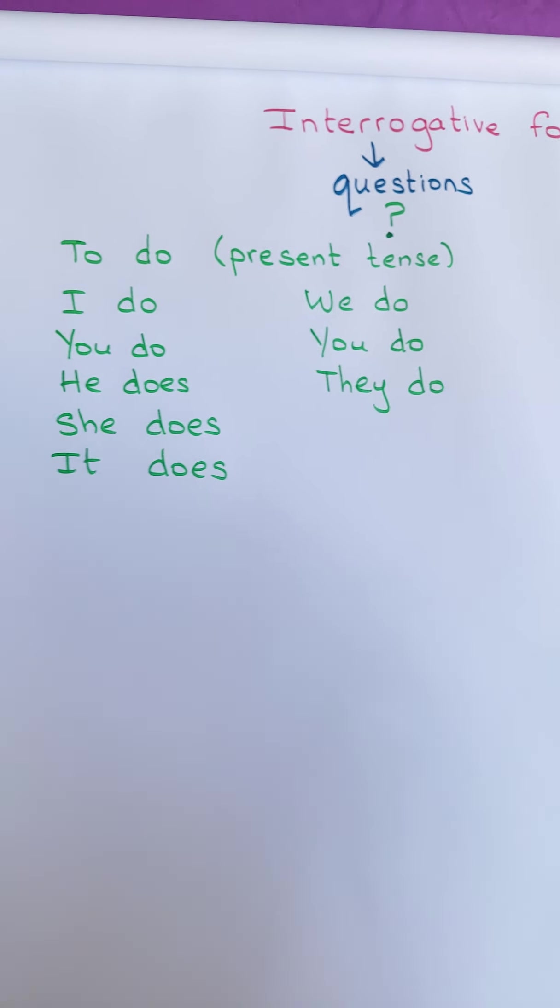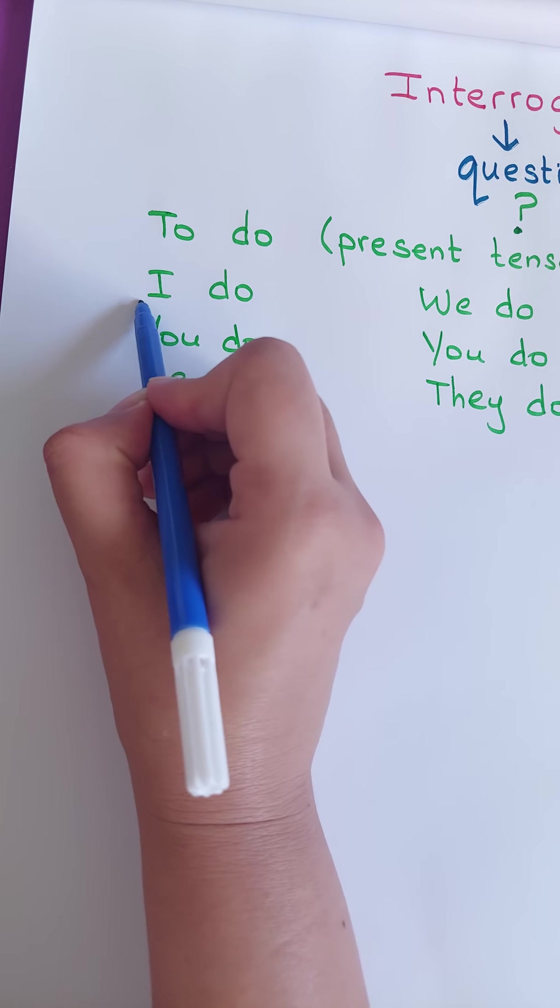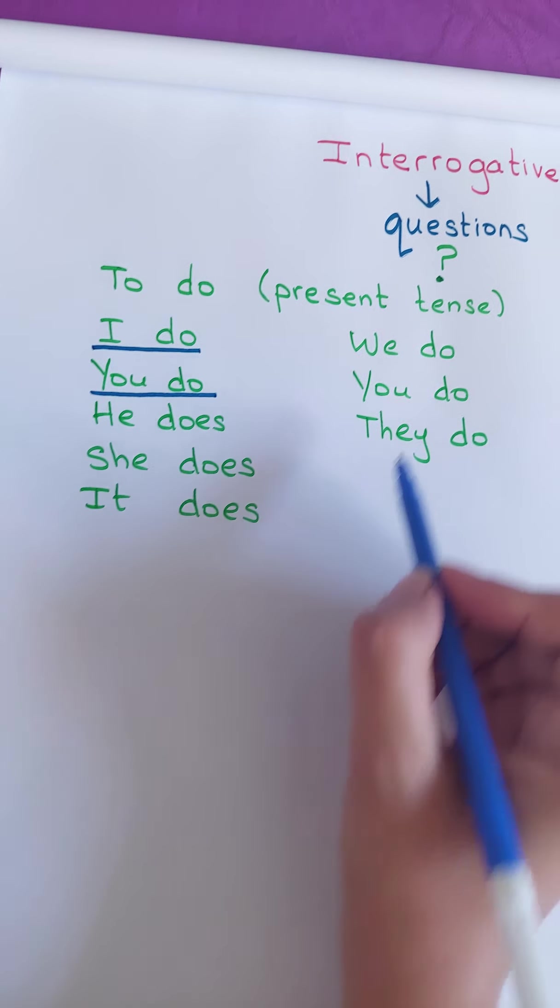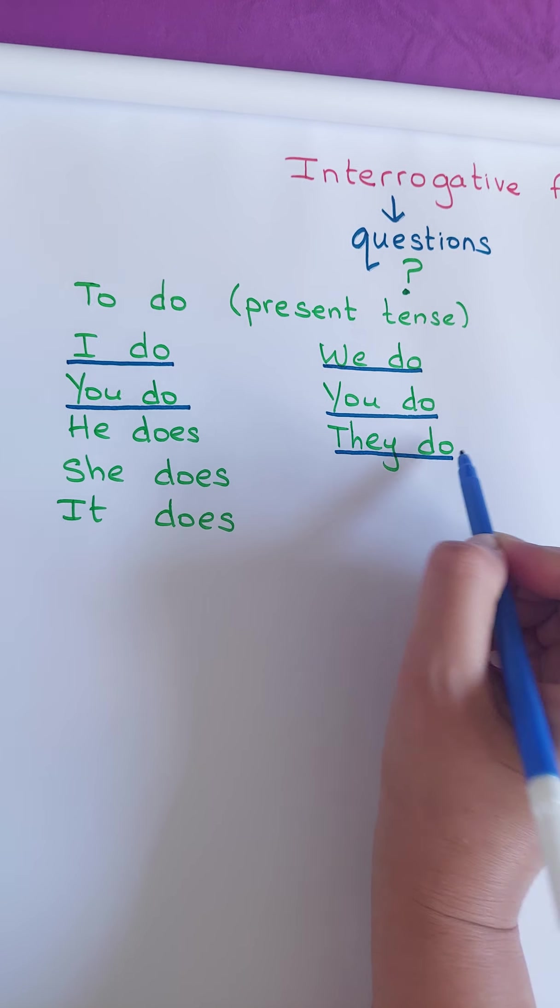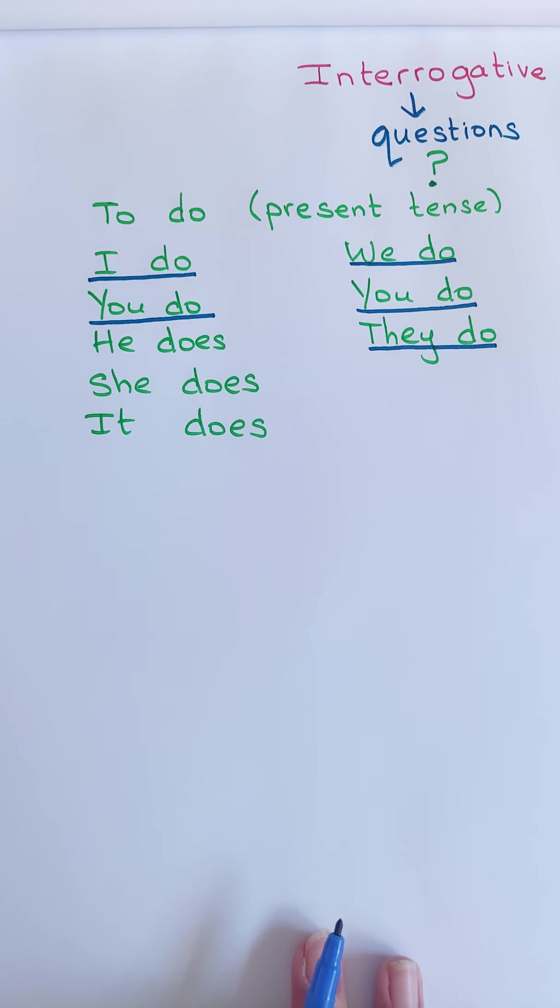Aujourd'hui, on va voir, on va se concentrer sur ça. I do, you do, we do, you do, they do. Pour faire le interrogative form.